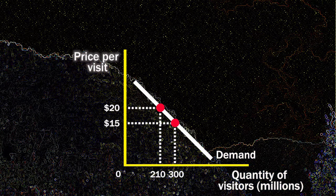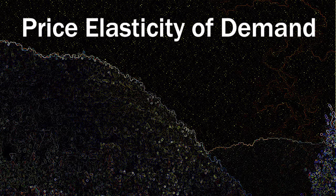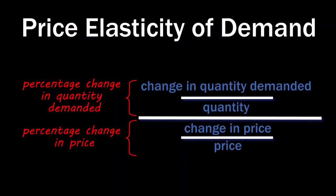And whether the price hike increases or decreases total revenue will depend on whether the price elasticity of demand is less than or greater than one. The price elasticity of demand for a good is the ratio of the percentage change in the quantity demanded to the percentage change in the price as we move along the demand curve for the good.